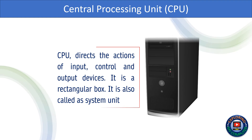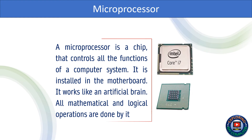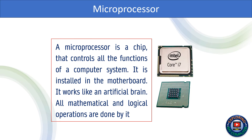The Central Processing Unit (CPU) directs the actions of input, control, and output devices. It is a rectangular box also called the system unit. A microprocessor is a chip that controls all the functions of a computer system. It is installed in the motherboard, works like an artificial brain, and performs all mathematical and logical operations.